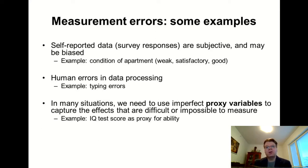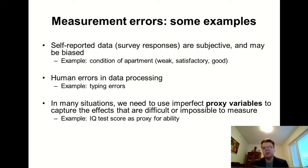Some researchers have used IQ test scores as a proxy for ability, but of course IQ tests have their own sources of error, so they are far from perfect. These examples illustrate that in many types of applications, the empirical data and measures we have may not be entirely perfect measures of what we actually wanted to measure. So we need to resort to some kind of proxy variables that may be better than nothing, but are far from perfect. This also nicely links to the omitted variable case — using some kind of imperfect variable may be much better than omitting the variable completely.